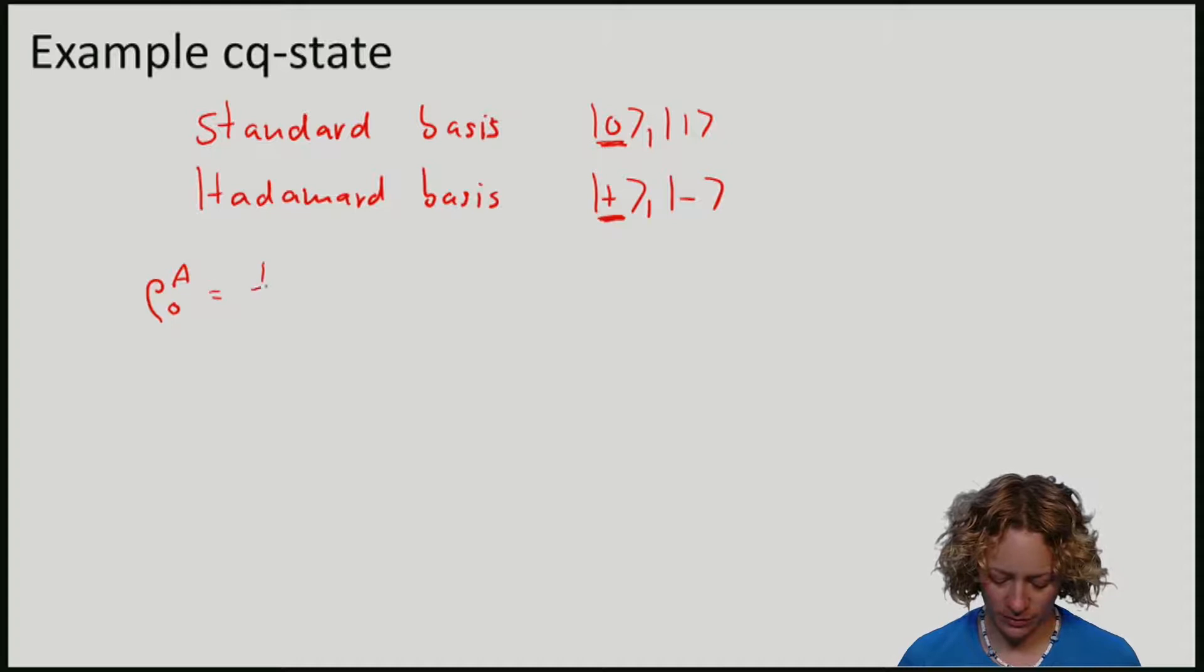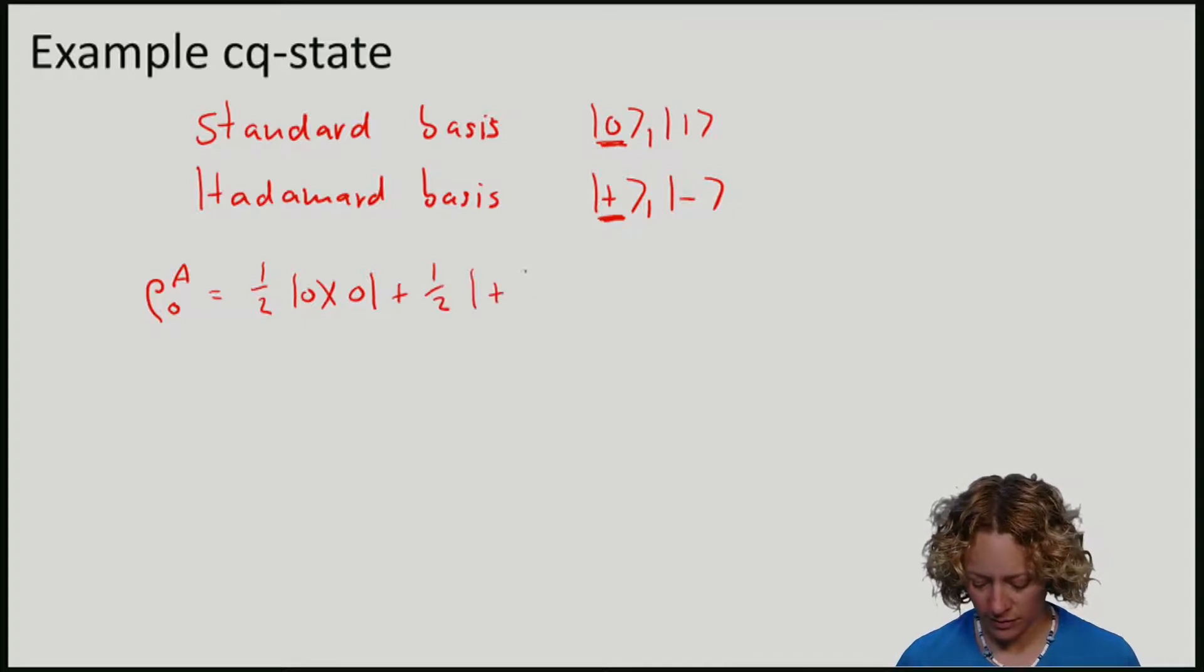Probability half, I have |0⟩⟨0|, and with probability half, I have |+⟩⟨+|.